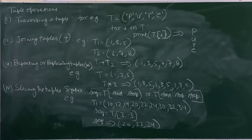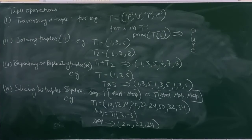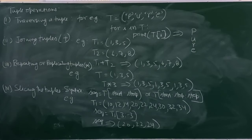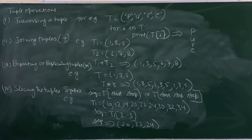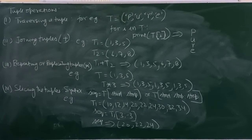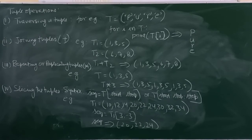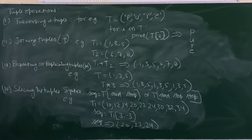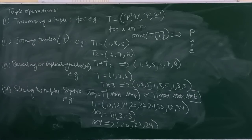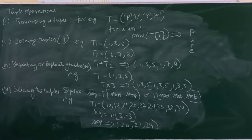T1 equals 10,12,14,20,22,24,30,32,34. Then SEQ equals T1 bracket 3 colon minus 3.